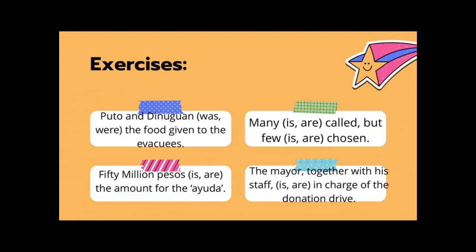Let's check if you got all your answers correct. For the first one, puto and dinuguan was or were the food given to the evacuees. Our correct answer is was. Take note, puto and dinuguan usually go together. For the second sentence, many are called, but few are chosen. Many and few always take a plural verb. Fifty million pesos is the amount for the ayuda. And the mayor, together with his staff, is in charge of the donation drive.